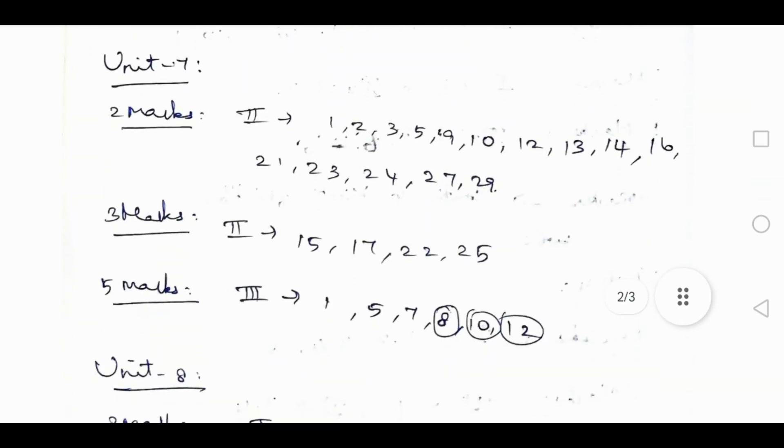Unit 7: 2 mark up to 2nd rom later 1, 2, 3, 5, 19, 12, 13, 14, 16, 21, 23, 24, 27, 29. 3 mark up to 2nd rom later 15, 17, 22, 25. 5 mark up to 3rd rom later 1, 5, 8, 7, 10, 12, 8, 10, 12 - don't skip it, important.